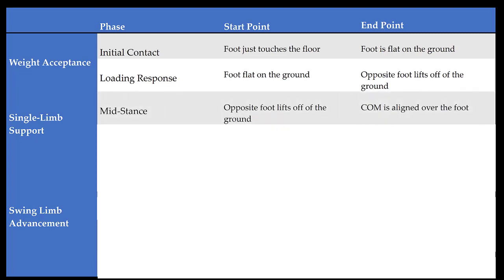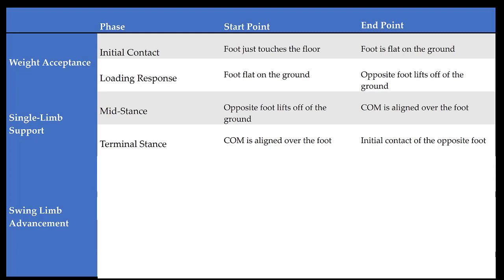With single limb support, we will first have mid stance. Mid stance starts when the opposite foot lifts off of the ground and ends when the center of mass is aligned over the support foot. Terminal stance will start when the center of mass is aligned over the support foot and will end with initial contact of the opposite foot. When the opposite foot makes contact with the ground, that signals that we have ended single limb support and are ready to move on to swing limb advancement.